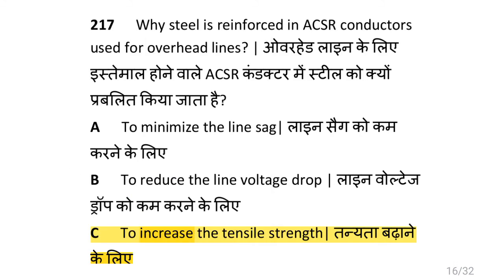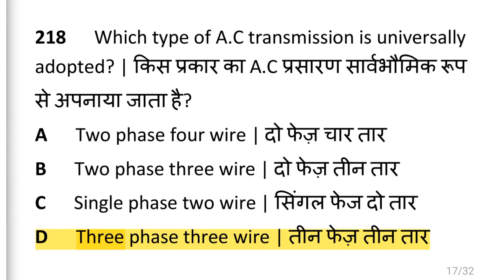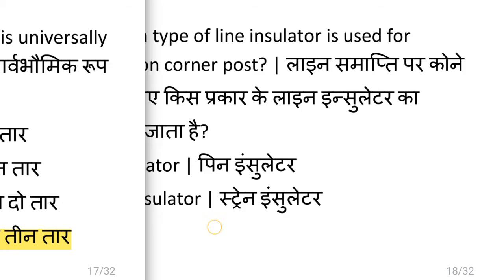Why is steel reinforced in ACSR conductors used for overhead lines? That is to increase the tensile strength. Which type of AC transmission is universally adopted? That is 3-phase 3-wire.